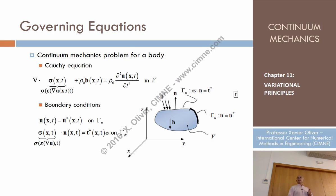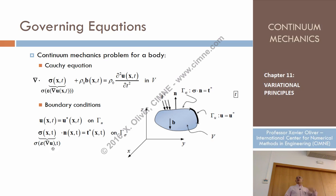Second, at the boundary gamma-sigma, we have another condition: the stresses, which are a function of the strains, which are a function of the gradient of the displacements, times the normal, equals T-bar. In other words, sigma times N minus T-star equals zero on gamma-sigma. This is a function of the displacements and gradient of displacements — ultimately just a function of the gradient of the displacements. These are the natural boundary conditions.